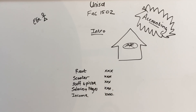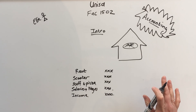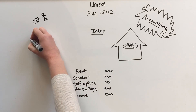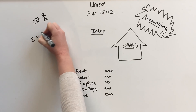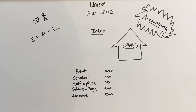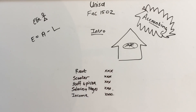With accounting there's a key formula that I'm going to teach you — we'll talk about it more in the next videos, so you don't have to understand everything immediately. But there's a formula in accounting that states: equity equals assets minus liabilities.